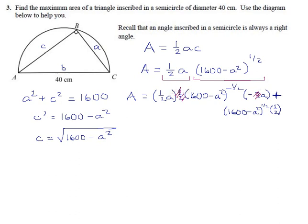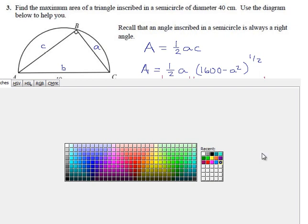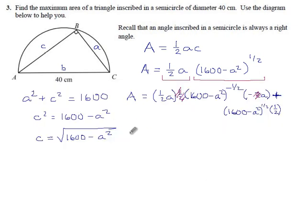Area equals, so we have a negative and one-half, we have an a and another a, that's a squared, and then we have 1600 minus a squared to the minus one-half. For the second term we have one-half, 1600 minus a squared to the positive one-half.